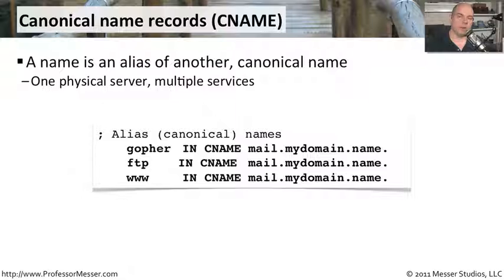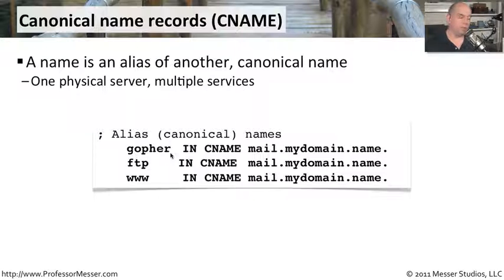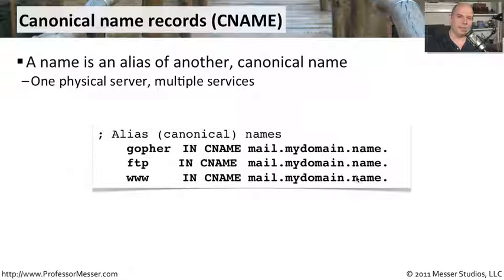A CNAME record stands for a canonical name record. This is a way to set aliases right in the configuration file of your DNS server. The name Gopher, the server name or device name we would like to reference, is actually a canonical name for mail.mydomain.name. FTP is also a canonical name for mail.mydomain.name. And www is also a canonical name for exactly the same server. So this is a good example where a single device is the mail server, the Gopher server, the FTP server, and the www server.